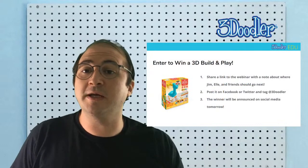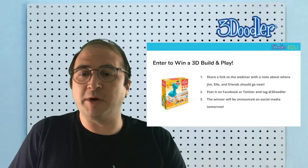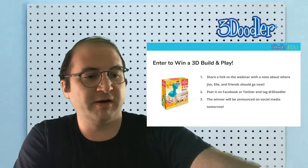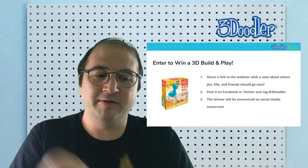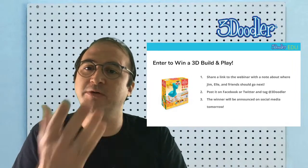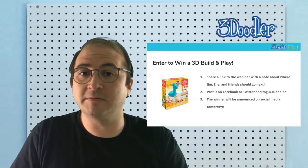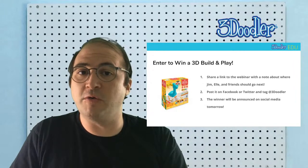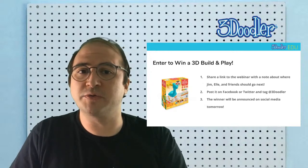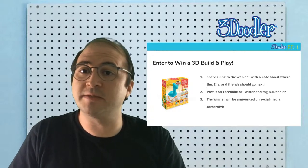To get started, you can enter a chance to win a brand new Build and Play. The idea is to create characters like Jim the giraffe and his friends. In order to win one, you simply suggest a new adventure that Jim the giraffe, Ellie elephant and their friends should go on, share the link to this webinar, and post it on Facebook or Twitter and tag us at 3Doodler. The winner will be announced tomorrow on social media.